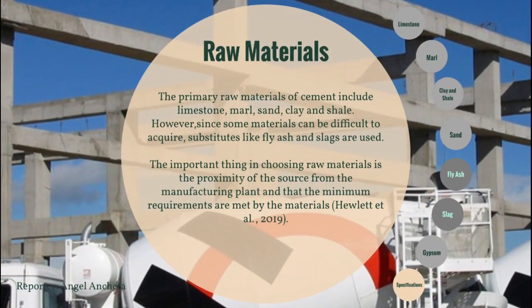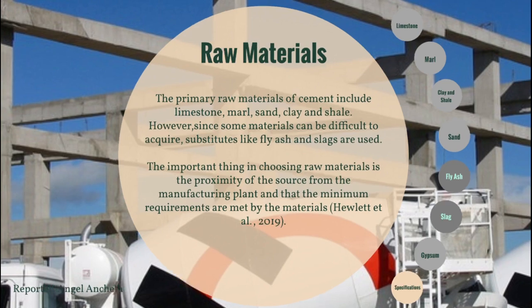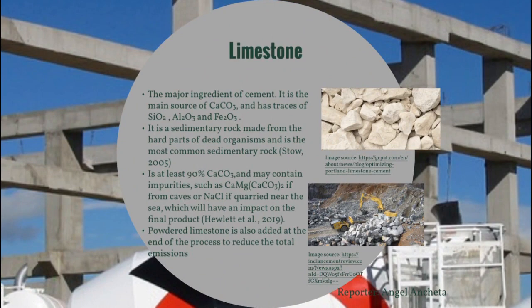The primary raw materials of cement include limestone, marl, clay, sand, and shale. However, due to environmental or economic reasons, substitutes like fly ash and slag are used. The important factors in choosing raw materials are the proximity of the source from the manufacturing plant and that minimum requirements are met. Limestone is the major ingredient, serving as the main source of calcium carbonate with traces of silicon oxide, aluminum oxide, and ferrous oxide. It is composed of at least 90 percent calcium carbonate. Powdered limestone is also added at the end of the process to reduce total emissions per bag.